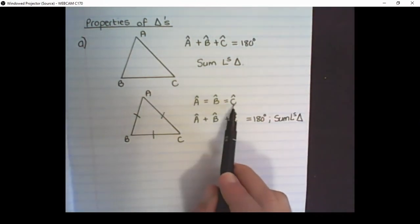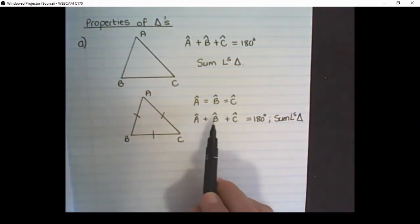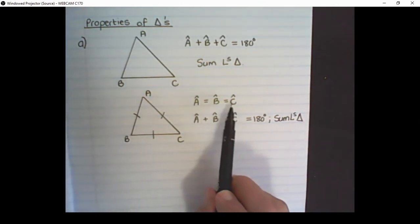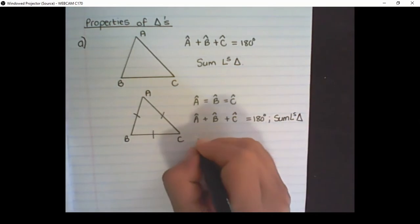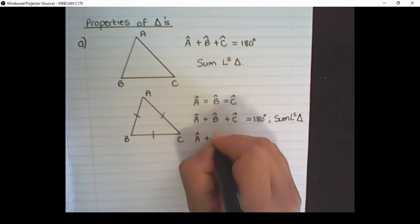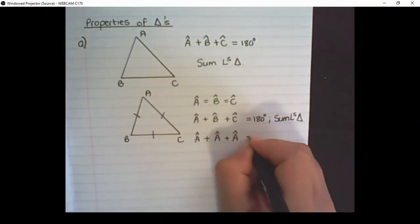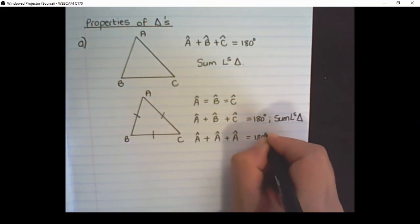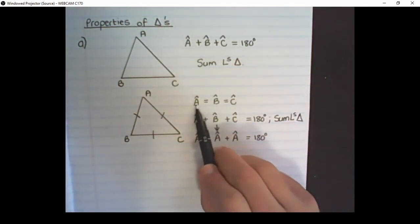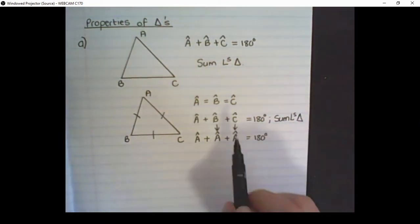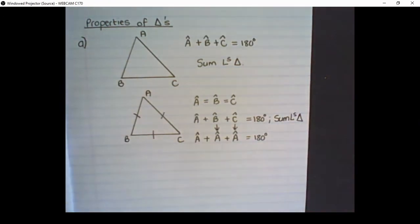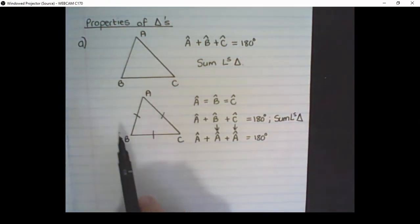But if all of these angles are equal, that means we can replace B with an A, and we can also replace C with an A. So I can say A plus A plus A is equal to 180 degrees, because I replaced B with A since angle B equals angle A, and I replaced C with A because angle C equals angle B equals angle A in an equilateral triangle.